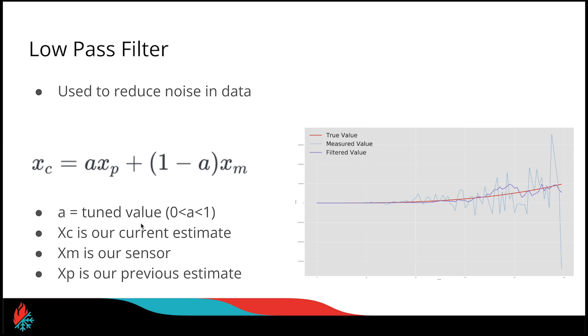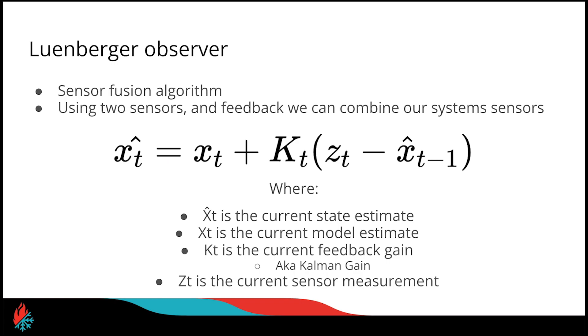With the low-pass filter, we tune this value a, which lives between 0 and 1. Low values of a will trust the most recent measurements more, and high values of a will provide more of a smooth effect. The one thing you need to be aware of is having a really high value of a will potentially impact your controller's performance to disturbance rejection.